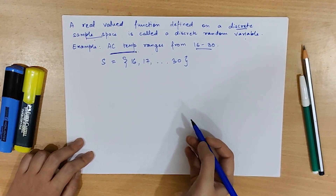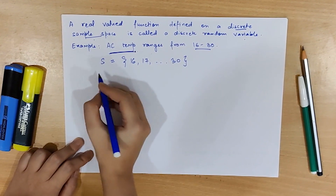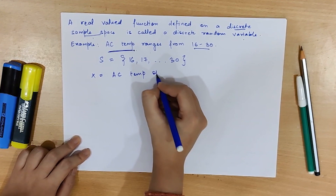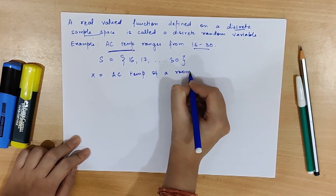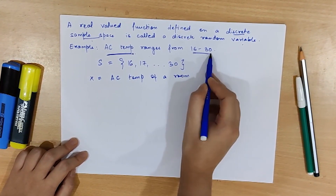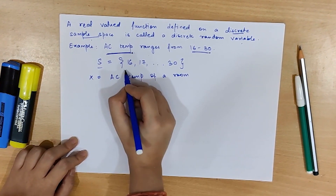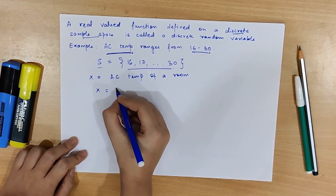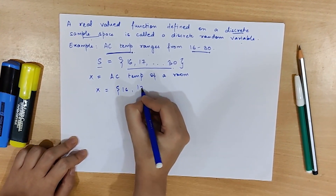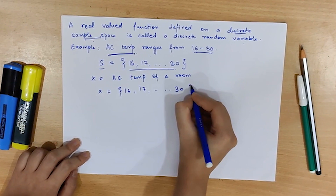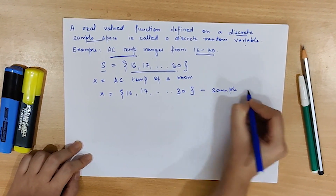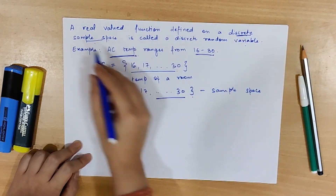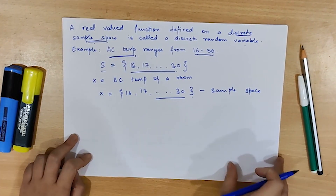Let's understand this with the help of an example. Let's say x is the AC temperature of a room. Usually the AC temperature ranges from 16 to 30, so our sample space would be 16, 17, up to 30. The possible values that x can take are 16, 17 till 30. Since these are countable, this means it is a discrete sample space, hence a discrete random variable.